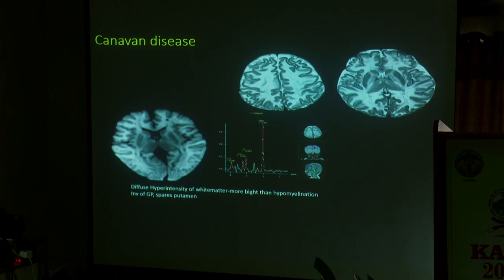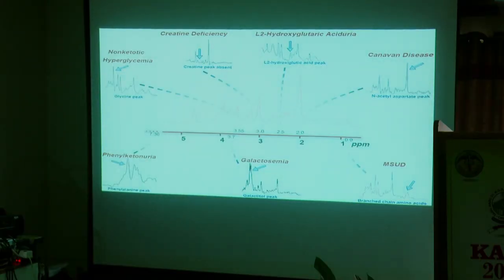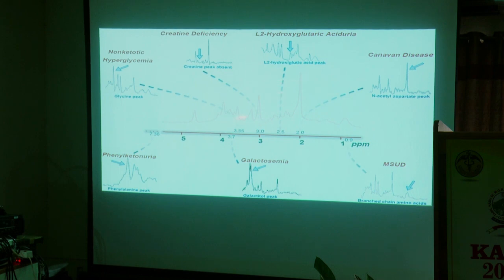Summary of spectroscopy peaks for confident diagnosis: 2 ppm elevated NAA — Canavan disease; 0.9 ppm branched-chain amino acids — MSUD; 3.4 ppm — L2-hydroxyglutaric aciduria; 3 ppm creatine absent — creatine deficiency syndrome; 3.5–3.7 ppm — phenylketonuria (PKU). These kinds of cases are commonly used in spotters.